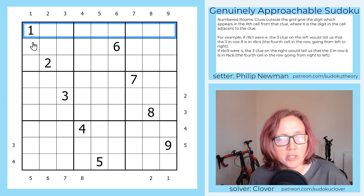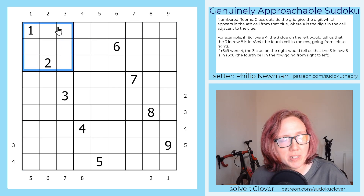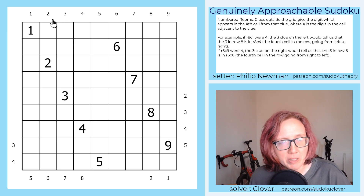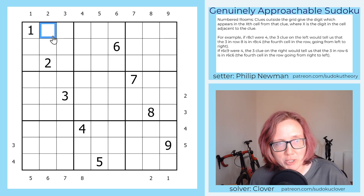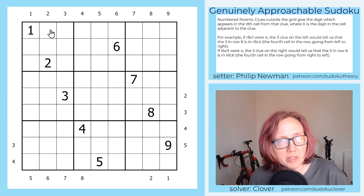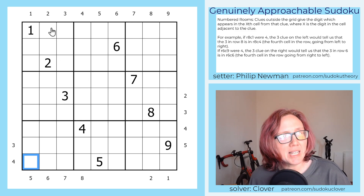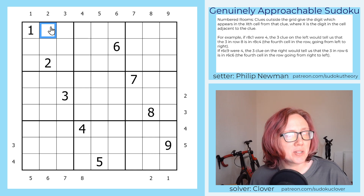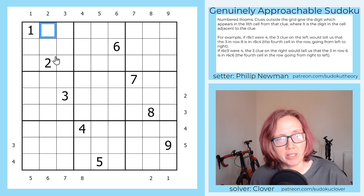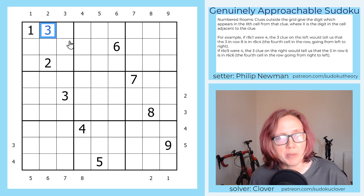This is a numbered room sudoku, so we have standard sudoku rules: placing the digits one through nine once each in each row, each column, and each outlined three-by-three region. There are also some numbered rooms clues outside of the grid. Basically, if you have a numbered rooms clue, you look at the first cell in that row or column. That first cell has a digit that tells us where the clued number goes in that row or column. For example, in this column we already know the digit two is in the third position, so we put a three there.